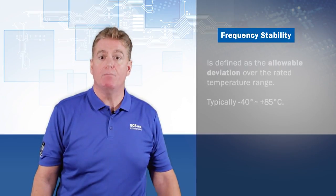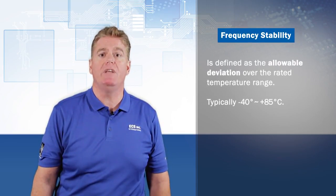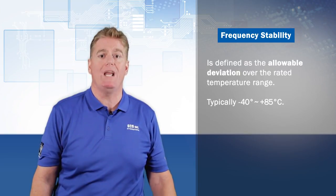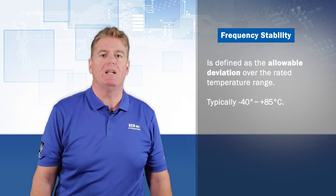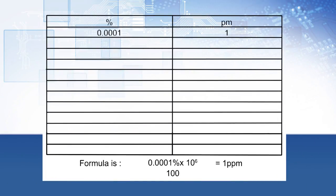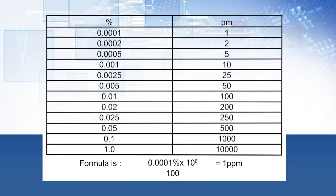The frequency stability is defined as the allowable deviation over the rated temperature range, typically minus 40 degrees to 85 degrees Celsius. Something to remember is that tolerance and stability are cumulative when managing your accuracy budget. They are typically expressed in parts per million, or sometimes as a percentage of the frequency.